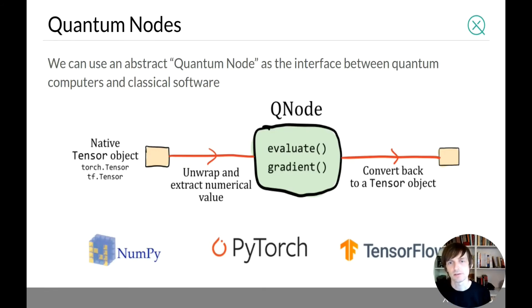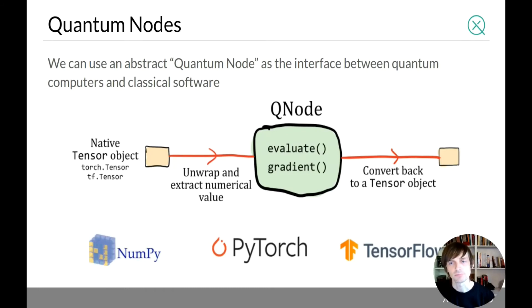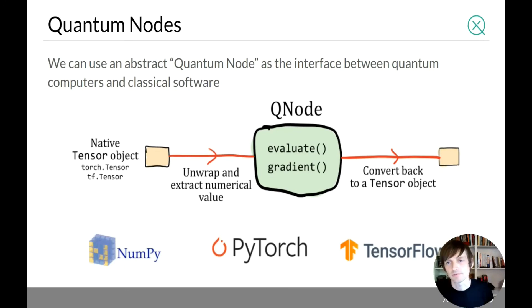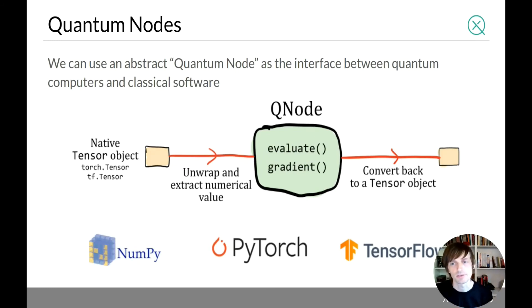In practice, your software framework of choice — TensorFlow, NumPy, PyTorch — has some native tensor or array objects. You peek into that object and extract the numerical value, run your quantum circuit based on those parameter values, and when computing the gradient, run the parameter shift rule. The Q-node is basically a class or object with two callable functions. Once called, you convert the result back to the native tensor object of the library and register the gradient function so it knows how to compute backpropagation. That's how you integrate quantum computations with existing machine learning libraries.